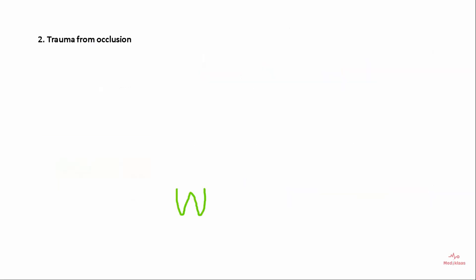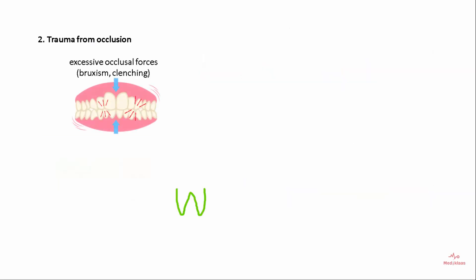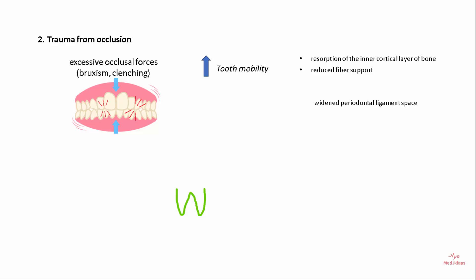Trauma from occlusion — excessive occlusal forces, especially during bruxism and clenching — can lead to increased tooth mobility. This occurs due to resorption of the inner cortical layer of bone, reduced fiber support, and widening of the periodontal ligament space.